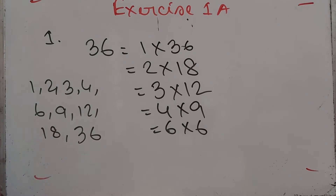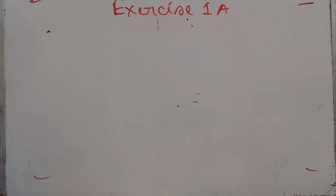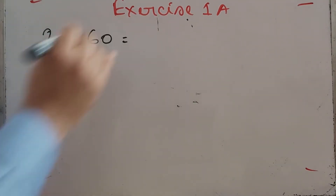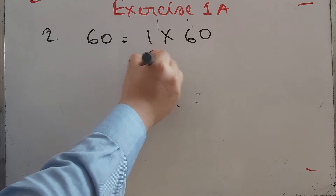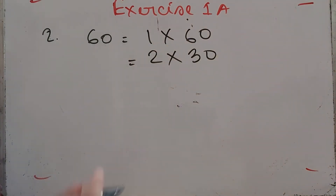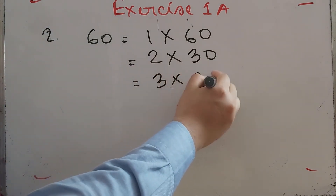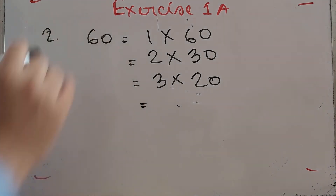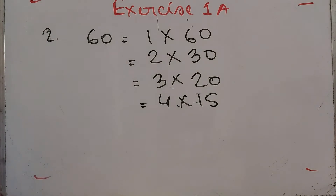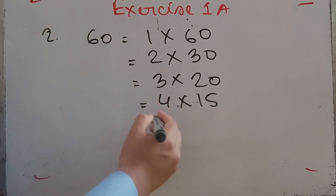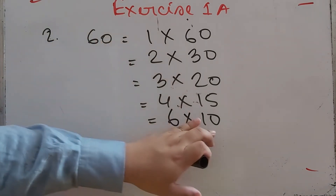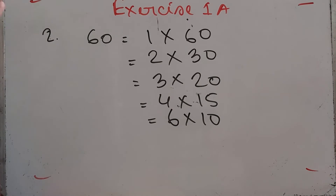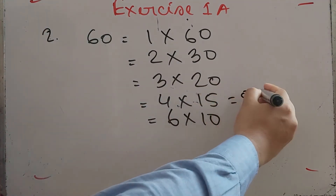Number 2: Write down all the factors of 60. Dividing 60 by 1 gives 60; by 2 gives 30; by 3 gives 20; by 4 gives 15; by 5 gives 12; by 6 gives 10; and by 10 gives 6.